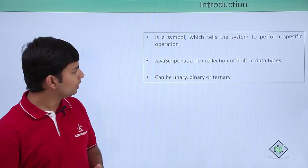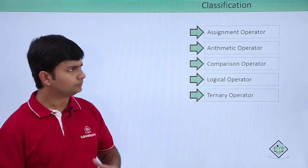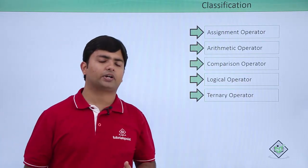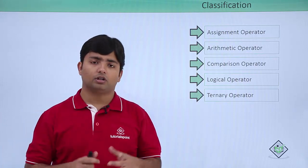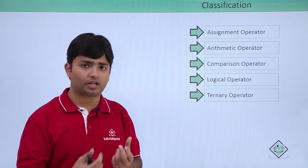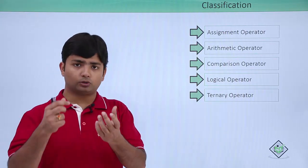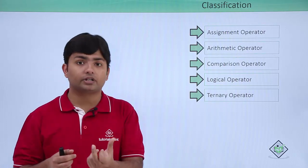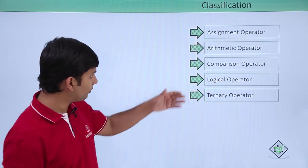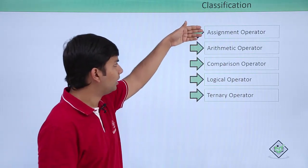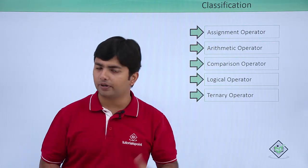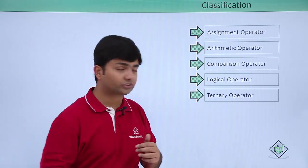Functionally we can classify operators into these categories: the assignment operator, which we have already seen — that is the equals-to symbol where we assign a value to a variable like var a equals 2. Apart from that we have the arithmetic operator, comparison operator, logical operator, and the ternary operator. Let's have a look at these operators individually.